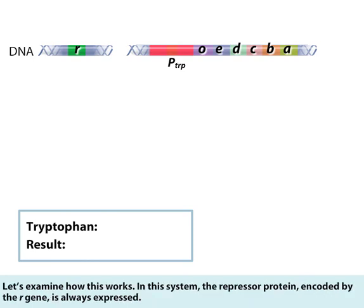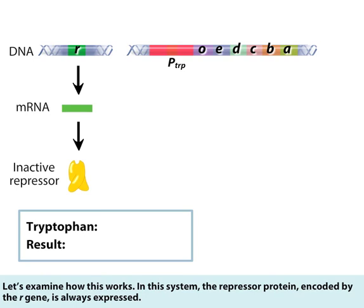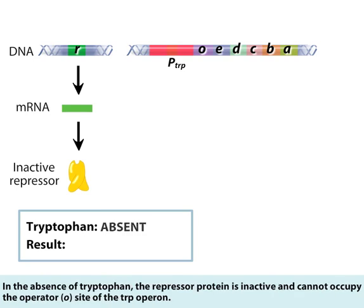In this system, the repressor protein encoded by the R gene is always expressed. In the absence of tryptophan,